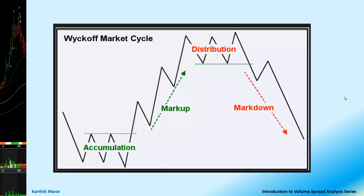Before we go into the details of the Wyckoff market cycle, let me narrate a small story — a story that will put the whole market manipulation in a nutshell. Many of you may have come across the famous story of the monkeys and the market, but I will narrate it again for those who have not heard it. There was a nice village which had a small population of monkeys. One day, a trader arrived in the village and offered a deal — he would buy a monkey at the rate of 100 rupees per monkey. The villagers thought it was a good deal and started catching monkeys and selling them to the trader.